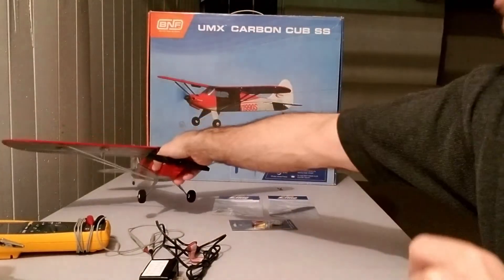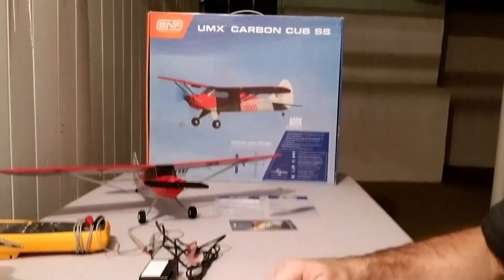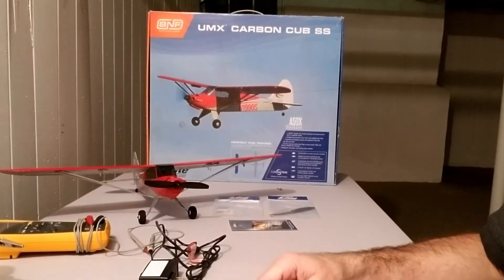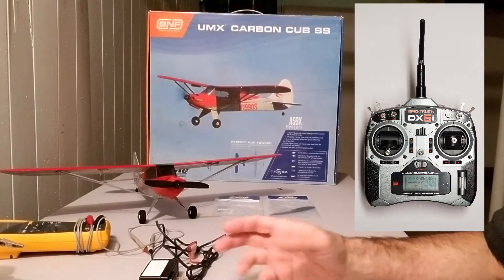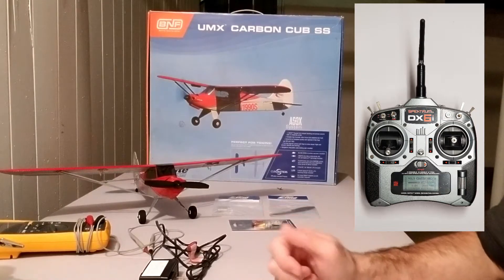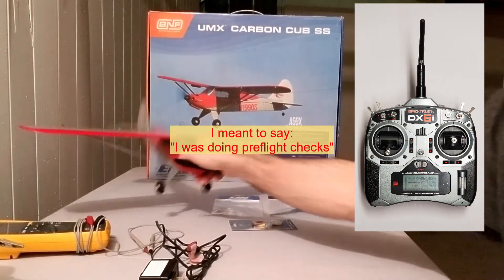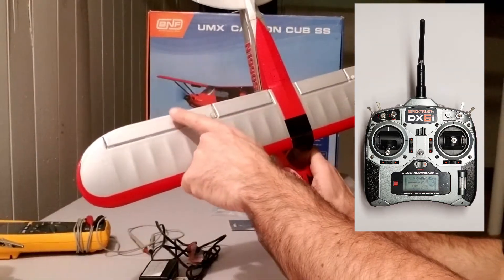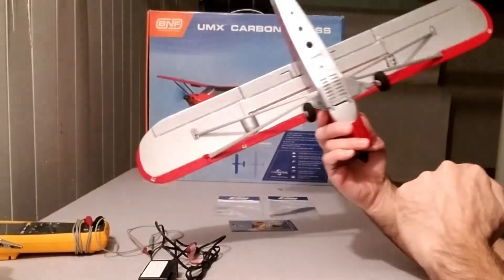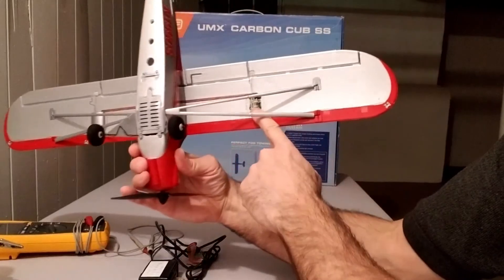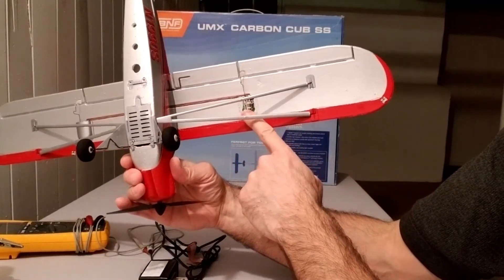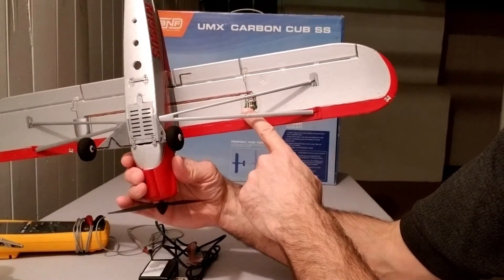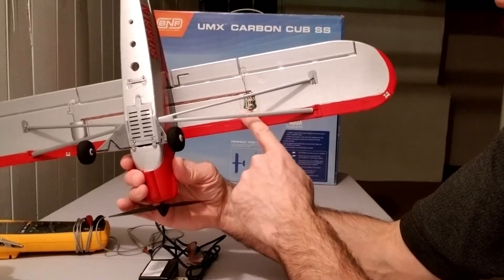So I got it, it came, and then I connected the battery, trying to bind to my Spectrum DX-6i. And it did. And then I was just doing the flight testing, and then I realized the right aileron was not moving. The left one is moving. So the servo that controls the right aileron was faulty, not just missing the cover, but it was faulty.